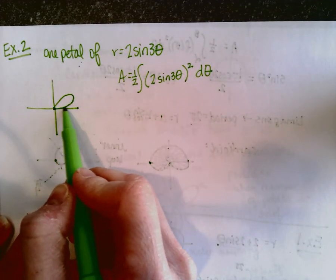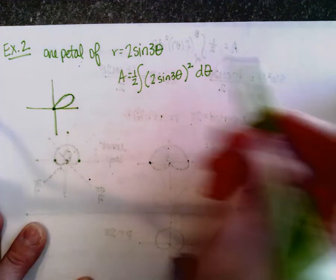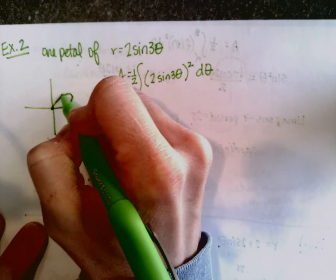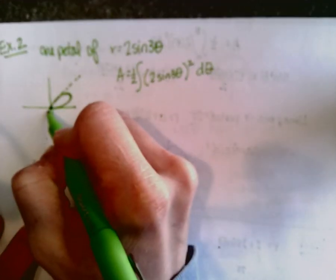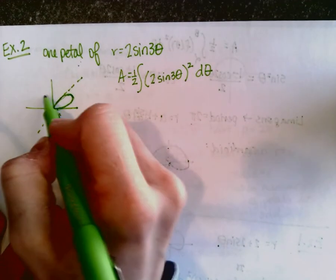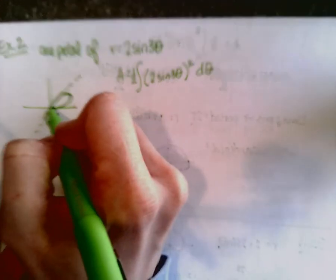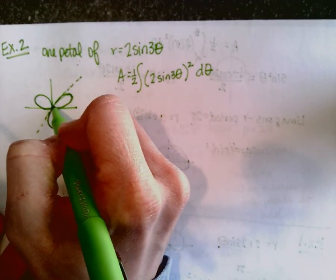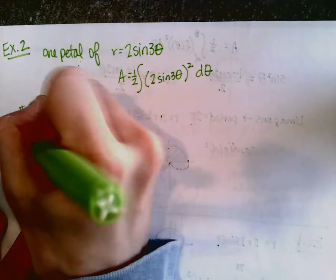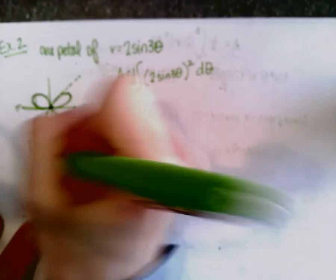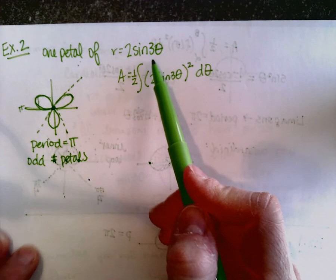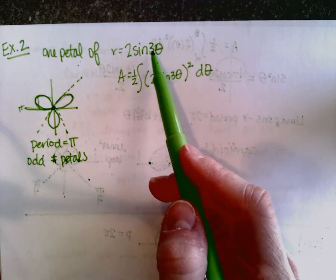For one petal, you start at r equals zero, go around, and you're back to r equals zero. For this graph, two sine three theta, one petal is done, then the next petal gets graphed with negative r values reflected down, and the third petal completes at two pi. The period equals pi when there's an odd number of petals, and the number of petals is determined by the number in front of theta.